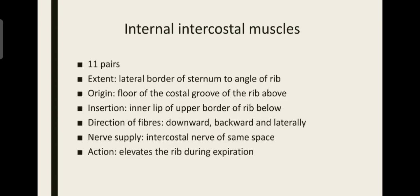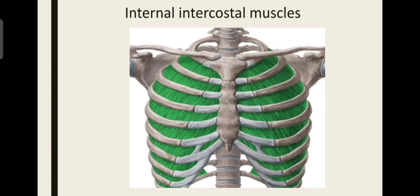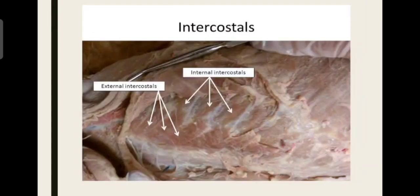The nerve supply is the intercostal nerve. The action is elevation of the rib during expiration — it is involved mainly in forced expiration. That is all about the internal intercostal muscles.